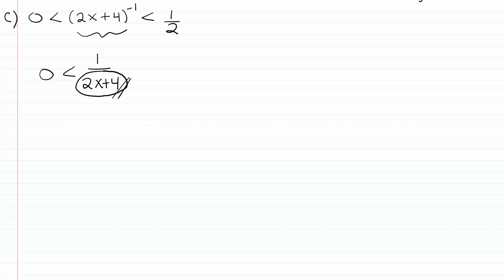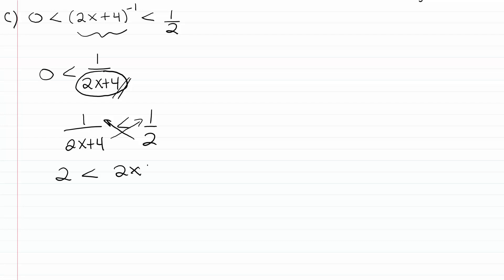Because of that, we can drop the left-hand piece and simply solve 1/(2x + 4) < 1/2. We can cross-multiply: multiplying across gives us 2 is less than 2x + 4. We need to know 2x + 4 is greater than 0 because if it were negative, we'd have to reverse the inequality symbol — but here we don't have to worry about that.